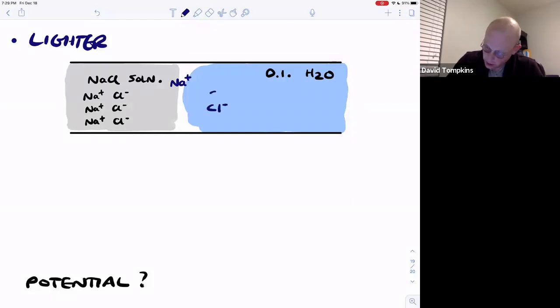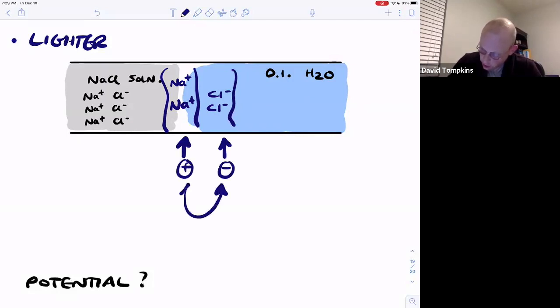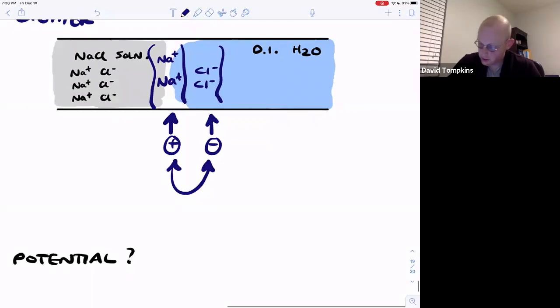So on average the chloride molecules or atoms are going to be further ahead, and the sodium are going to form this positively rich layer while the chloride form this negatively rich layer. And any time we separate charge because of the differential mobilities of these ions, that's going to create a junction potential.